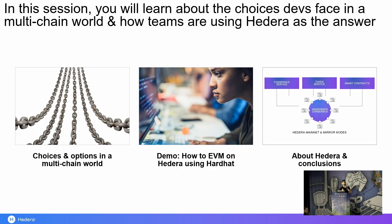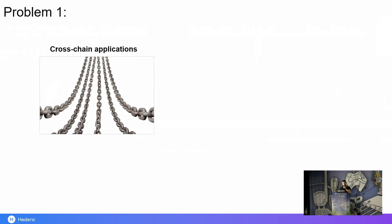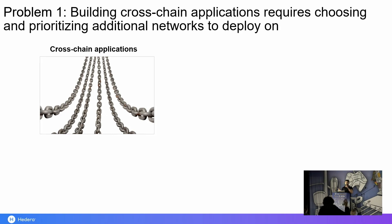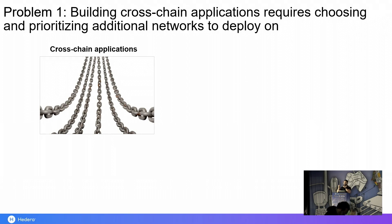So let's start by looking at two problems that come with this explosion of so many layer ones and layer twos, and these are problems that also touch many teams out there. The first one is that end users in Web3 are scattered — they're all over the place. You can see them across many different networks and also many different ecosystems. So naturally, Web3 developers are building these cross-chain applications to reach a wider and also more diverse user base.